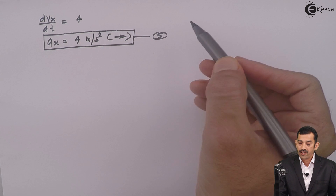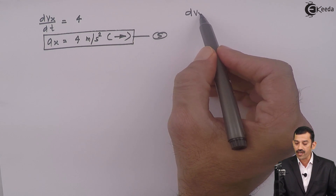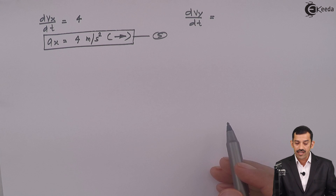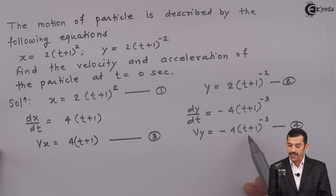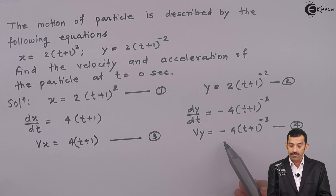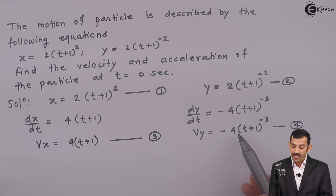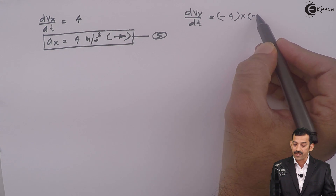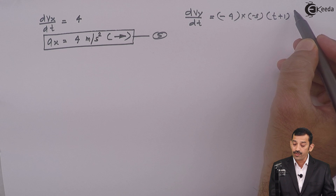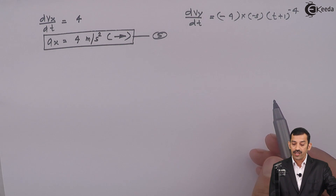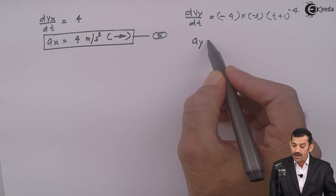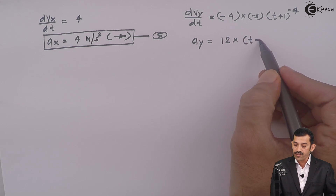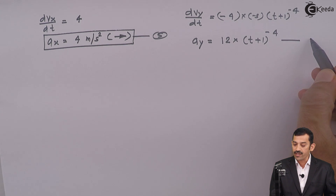Similarly, differentiating vy gives dvy by dt. Now vy is minus 4(t + 1) raised to minus 3. Differentiating gives minus 4 into minus 3, which becomes 12(t + 1) raised to minus 4. Therefore, ay = 12(t + 1) raised to minus 4 — equation number 6.